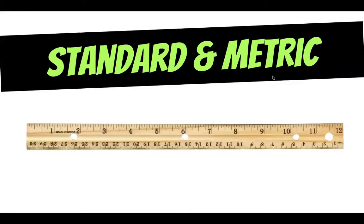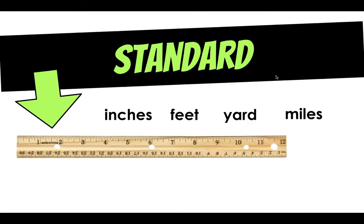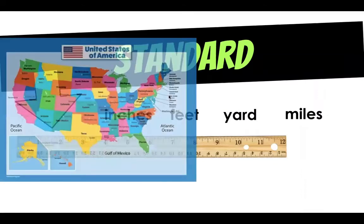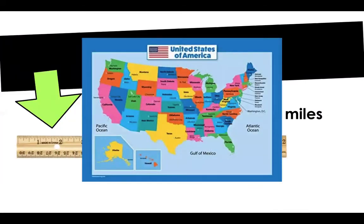Standard and metric units of measurement are two different units of measurement that are used in our world today. So standard units are inches, feet, yards, and miles. And when we do standard we look at this side of our ruler. This is the inches side of our ruler. Standard units of measure are used in the United States.